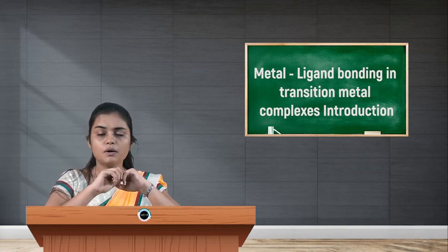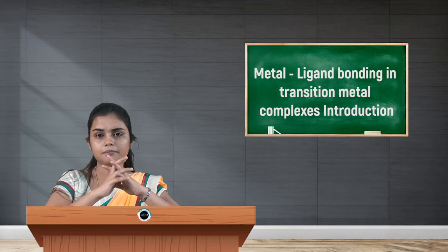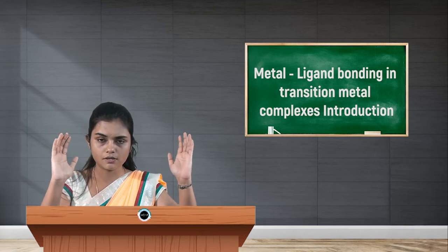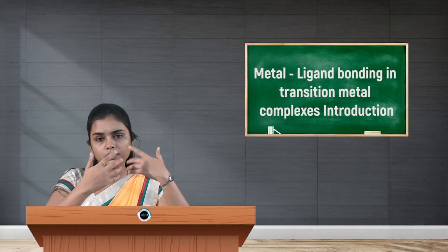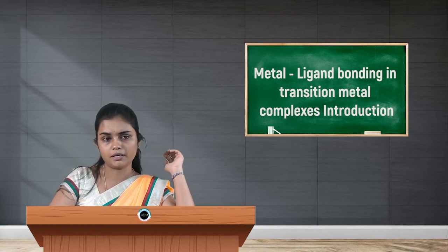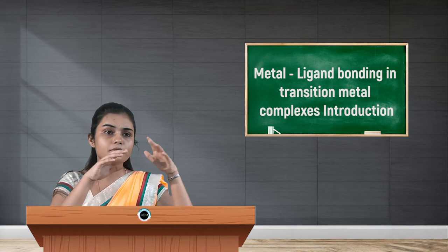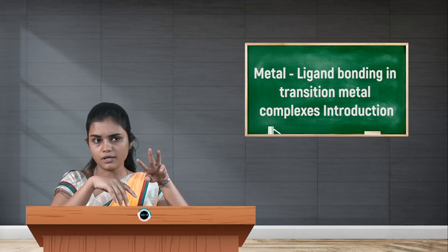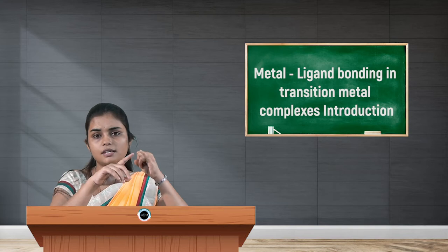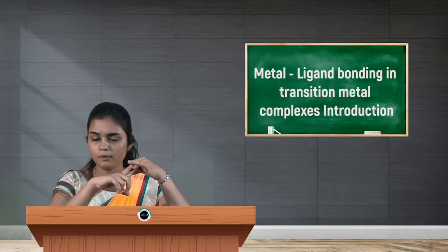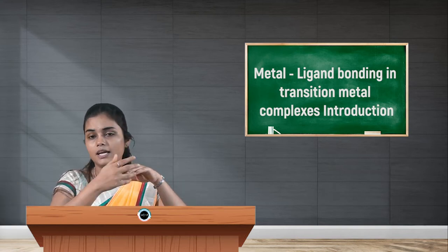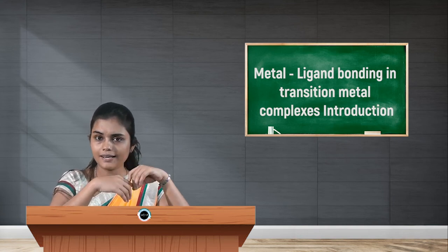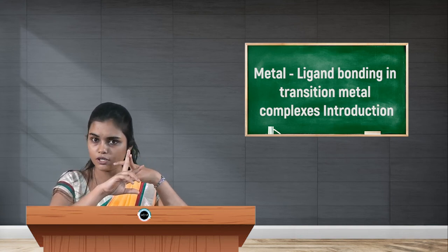Now, what is bonding? Bonding is nothing but an attraction between two atoms or two nuclei. The types of bonding we come across include covalent bonding, ionic bonding, and coordinate bonding. We can also include hydrogen bonding, Van der Waals interactions, and metallic bonding.